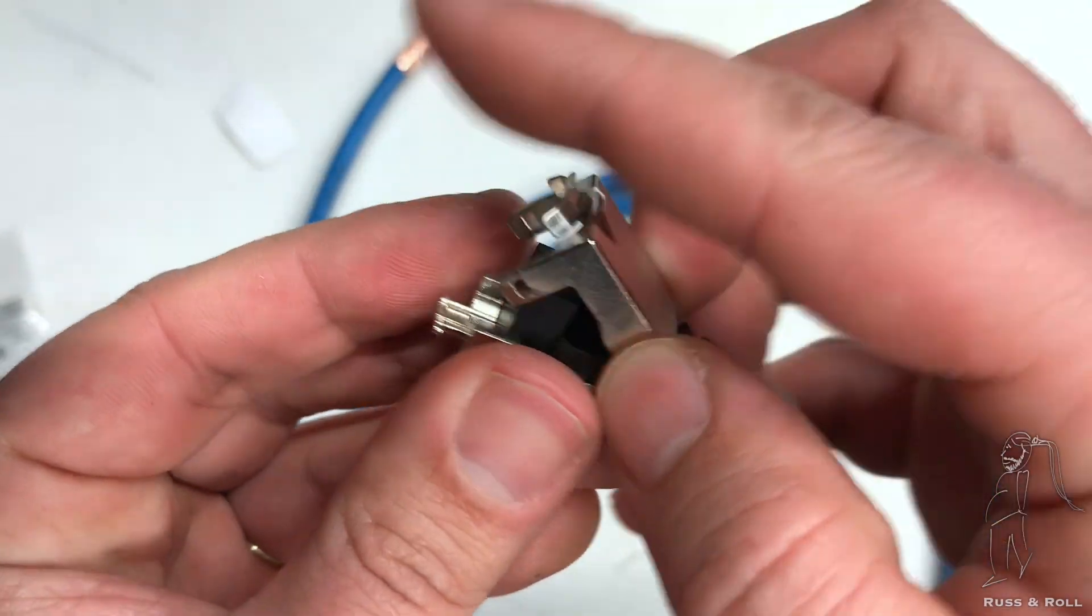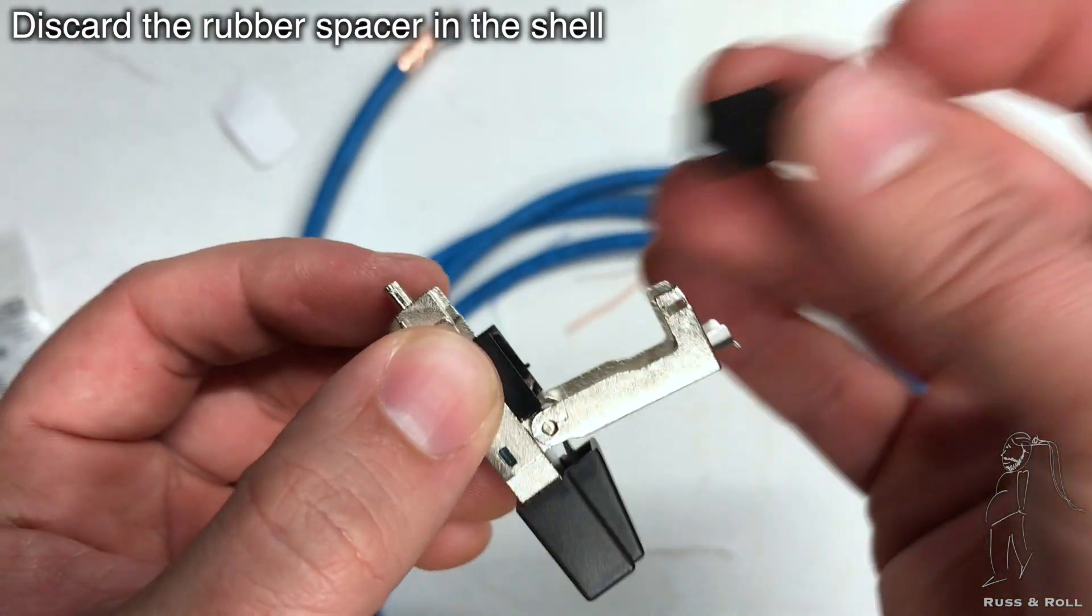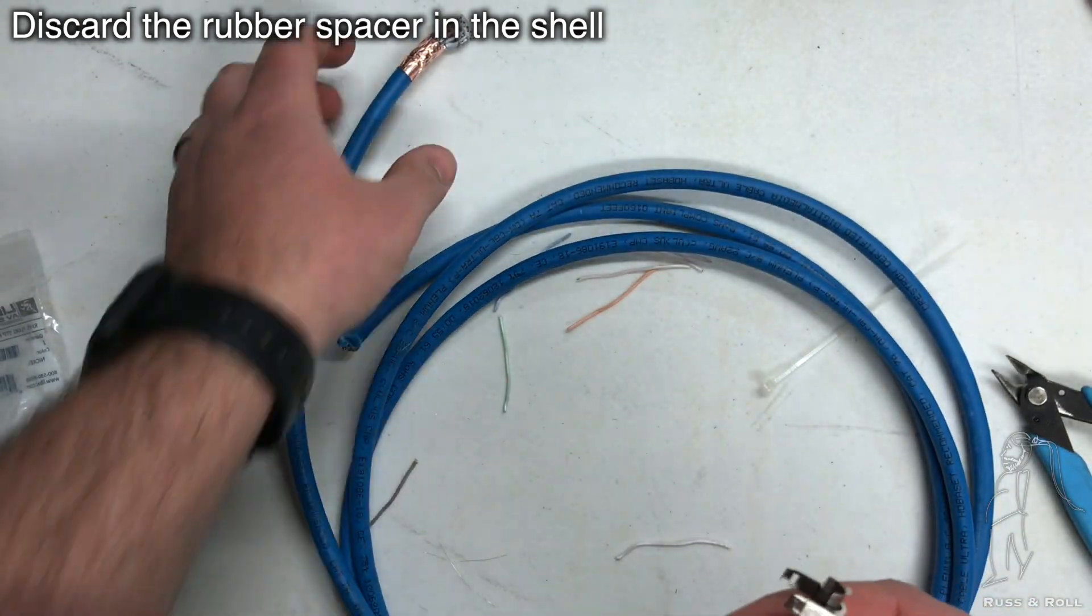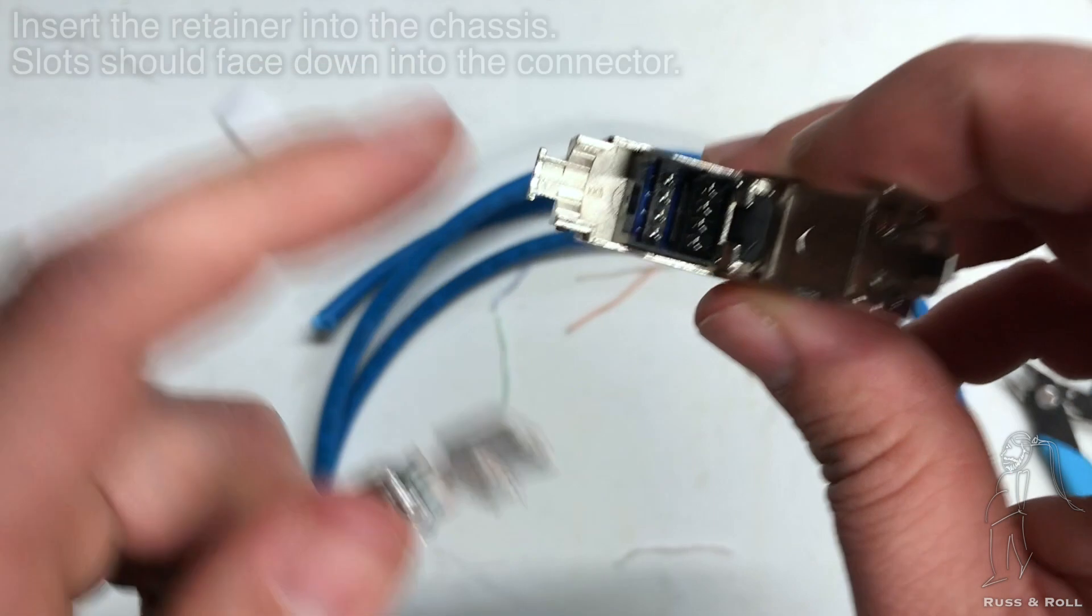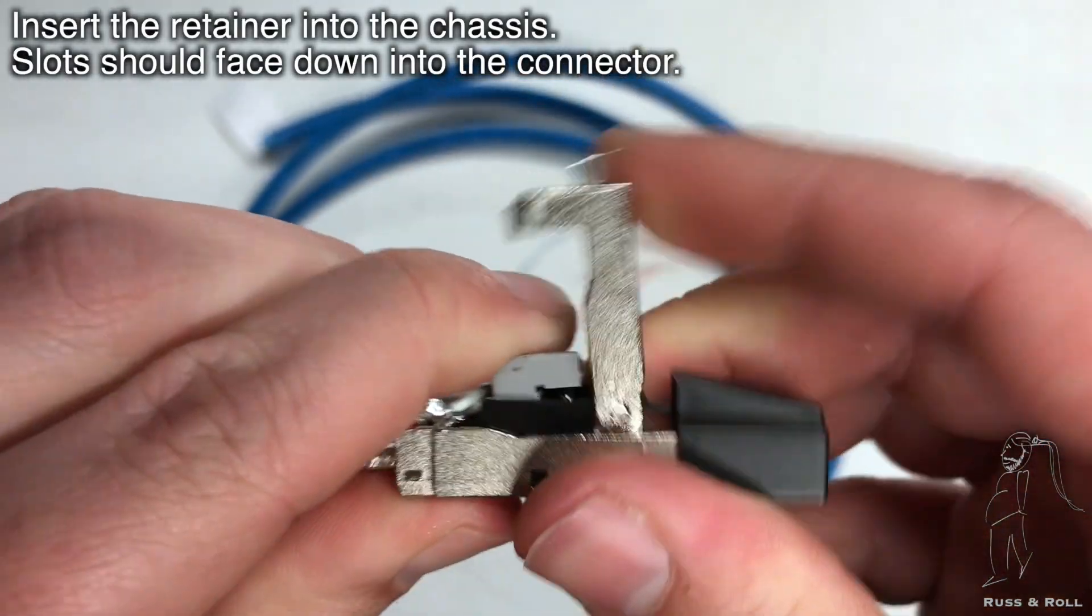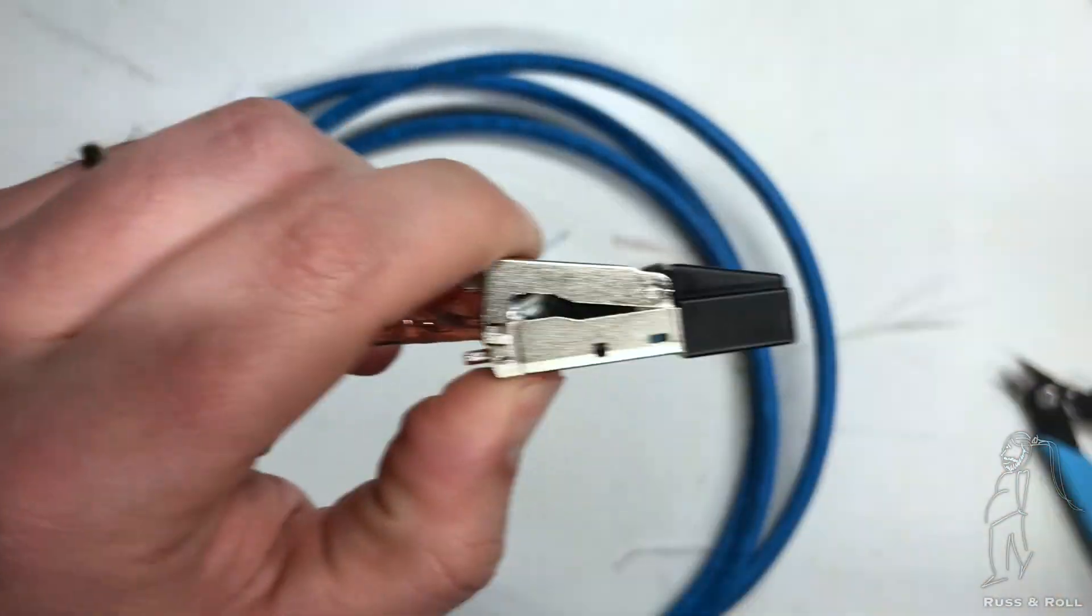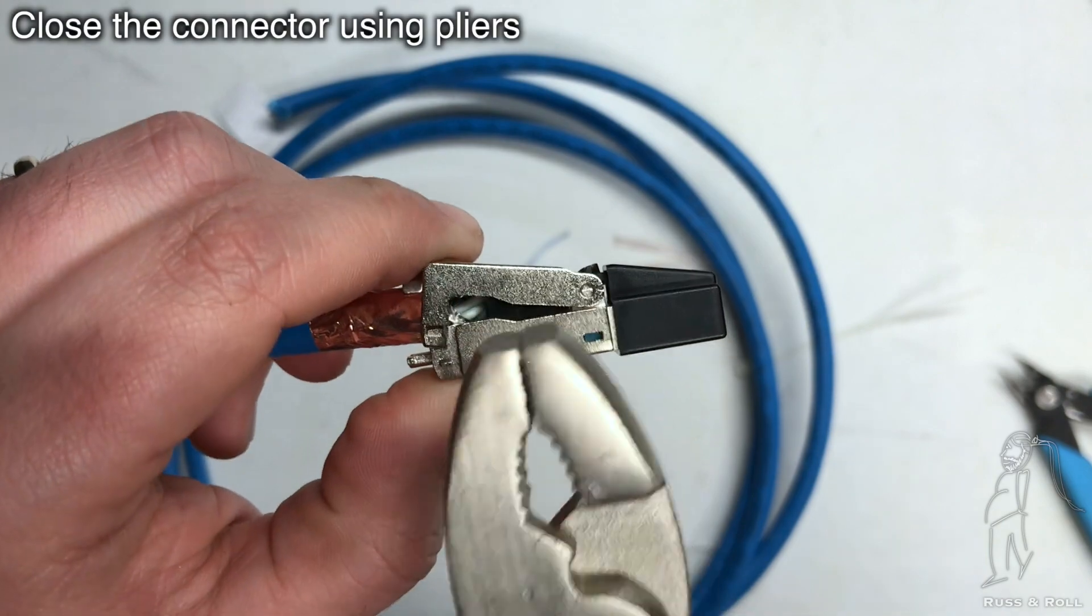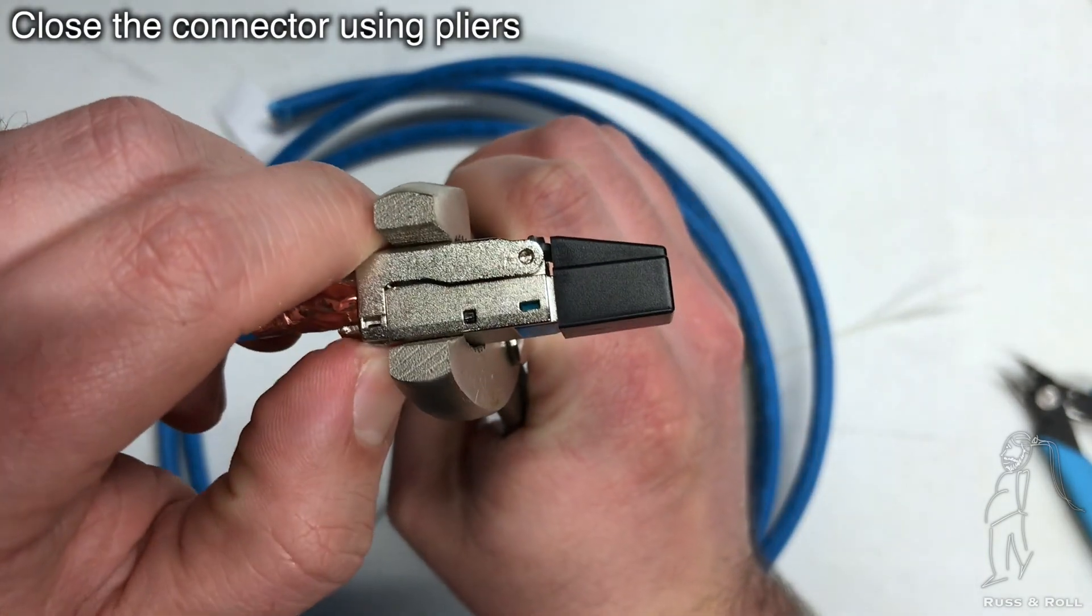Now take the shell of the connector and open it up. You're going to find a black rubber block thing in there. You can throw that away. That's just like a spacer for shipping. It's not important. Now you're going to take the retainer clip and insert it into the chassis. It's only going to go in one way. And then you're going to close it down a little bit and take your pliers and squeeze the connector shut. This is basically going to be like a punch down.